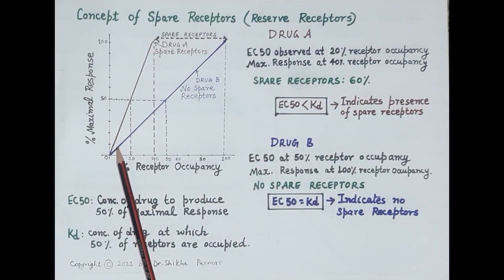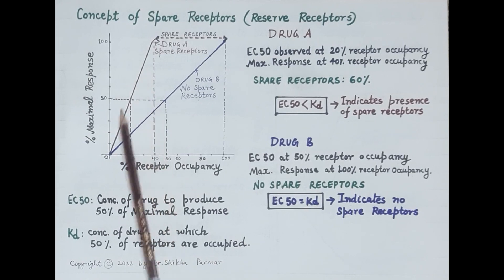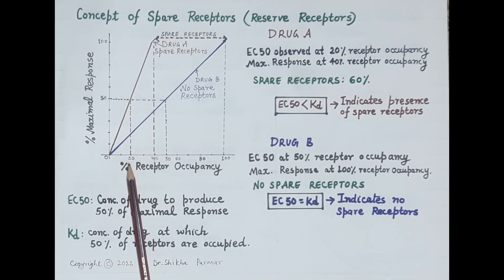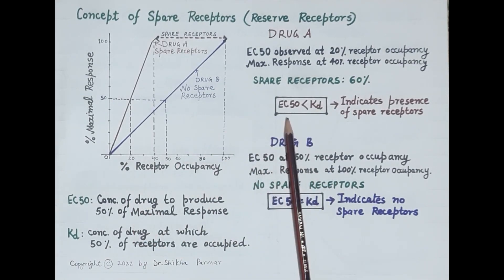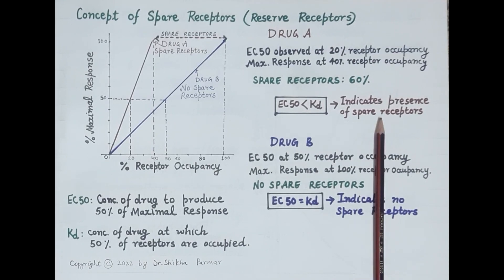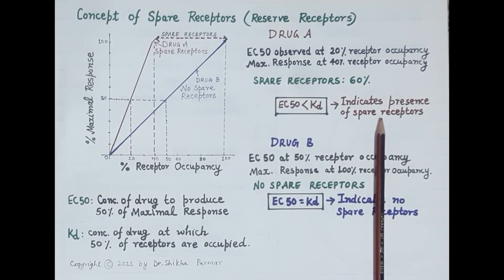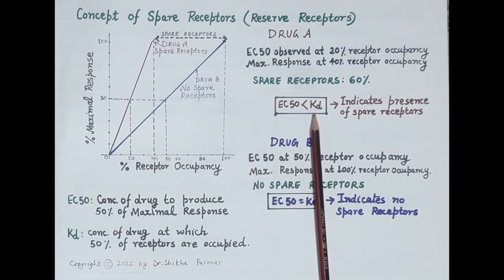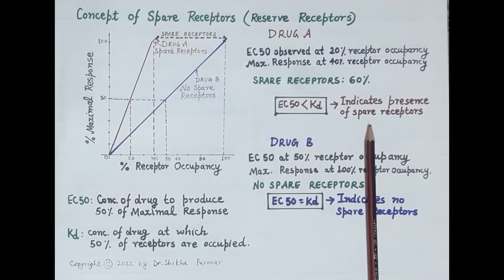Looking at the curve for Drug A, 50% of the response is produced when only 20% of receptors are occupied. This means EC50 is less than KD for Drug A. If the half maximal effective concentration or dose is less than the dissociation constant, it indicates the presence of spare receptors.